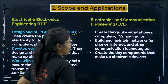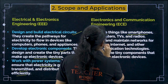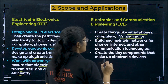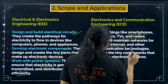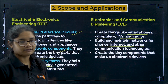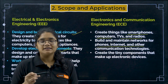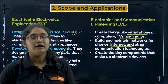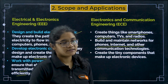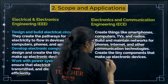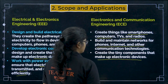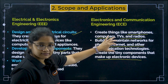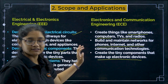For ECE, the career scope includes creating things like smartphones, computers, TVs, and radios; creating communication devices; and building and maintaining networks for phones, internet, and other connectivity. All the networking and internet communication technologies we use every day fall under ECE. It also covers creating the tiny components that make up electronic devices, since electronics is present in both branches.